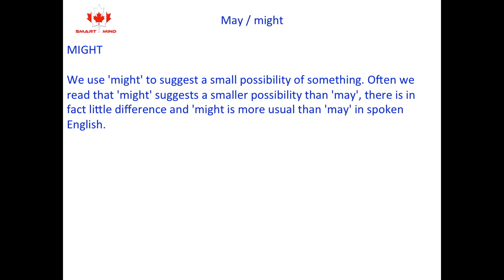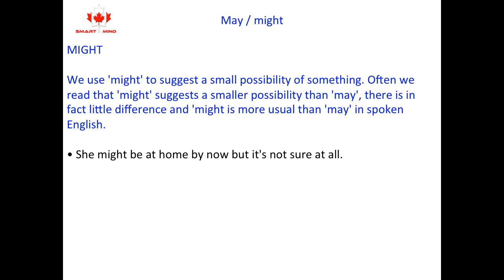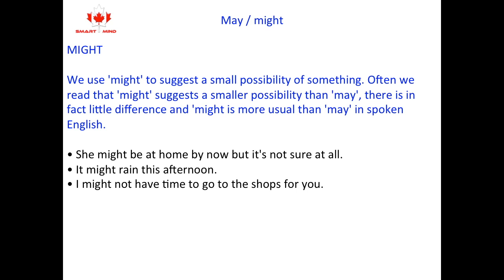Might. We use might to suggest a small possibility of something. Often we read that might suggests a smaller possibility than may. There is, in fact, little difference, and might is more usual than may in spoken English. For example: She might be at home by now, but is not so sure at all. It might rain this afternoon. I might not have time to go to the shops for you. I might not go.